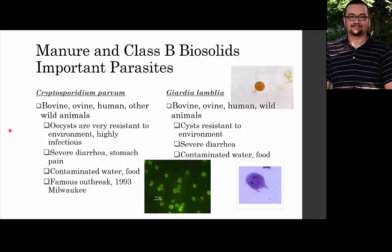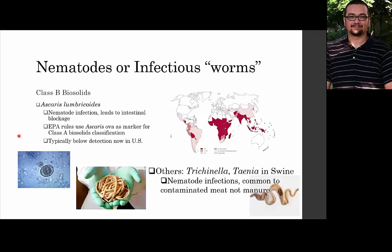Looking at manure and Class B biosolids-important parasites: I group Cryptosporidium parvum and Giardia lamblia together because they cause very similar symptoms — severe diarrhea, stomach cramps, pain, and gas. They are rough parasites. They colonize a number of hosts: cows, pigs, humans, and wild animals. Their oocysts and cysts are very resistant to the environment, so they do survive out there. If you go camping and drink from any fresh stream, remember that fresh stream was once a deer's toilet.